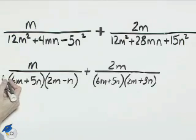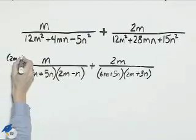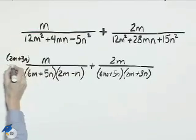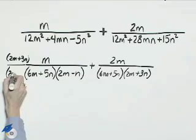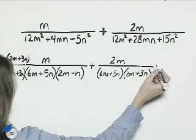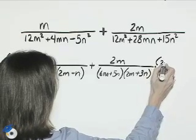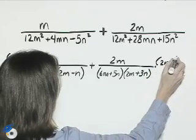So we need to multiply the first fraction by 2m plus 3n, both the numerator and denominator. 2m plus 3n. For this fraction, we need to multiply the numerator and denominator by 2m minus n.